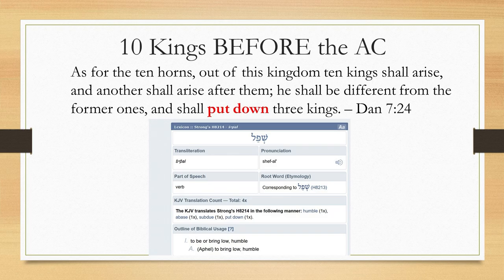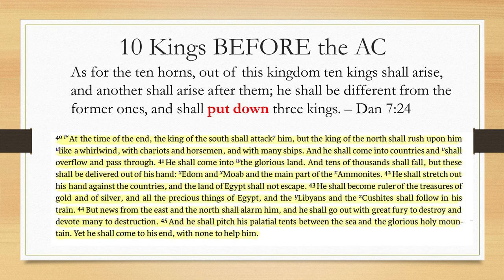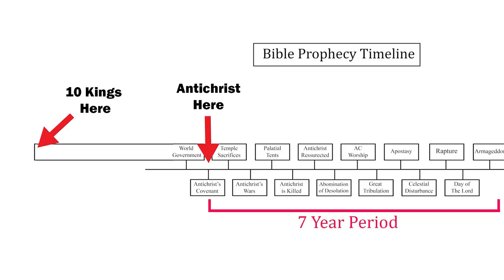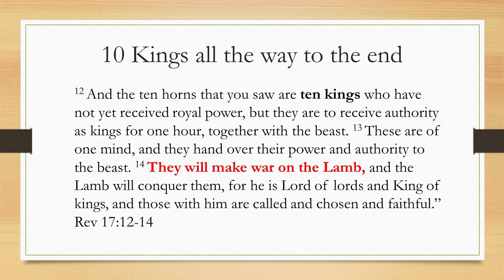The three of the ten kings that the Antichrist puts down are not destroyed during this conflict. The word used by the interpreting angel means to subdue or humiliate them, which is the word many Bible translations use. I think you can see a picture of this war and subsequent subservience in Daniel 11. We can also know that these ten kings — who necessarily exist before the Antichrist arises, before the 70th week of Daniel or at the very least right at its beginning — exist as ten units all the way to the very end of the 70th week.